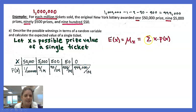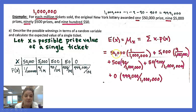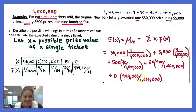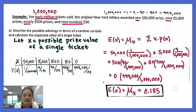The formula for the mean says the sum of every X times its P(X). So we take each X value times the probability of getting that value. That's 50,000 × (1/1,000,000) + 5,000 × (9/1,000,000) + 500 × (90/1,000,000) + 50 × (900/1,000,000) + 0 × (999,000/1,000,000). We end up with 0.185. So 0.185 is the expected value, or the mean.